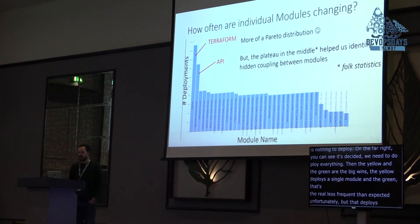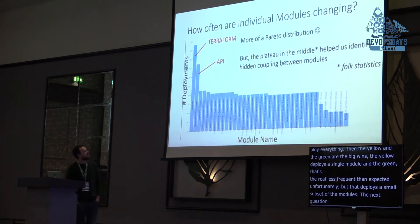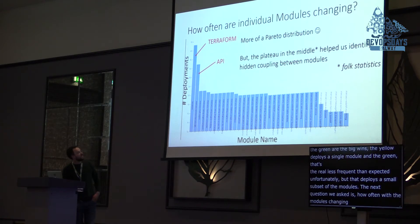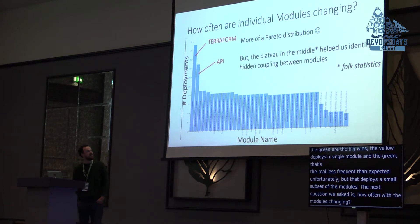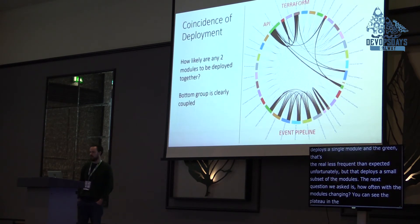The next question we asked is: how often are individual modules changing? This one is more of a Pareto distribution — that's great — but you can see there's a plateau in the middle, and from that we figured out that there's actually some hidden coupling between modules.